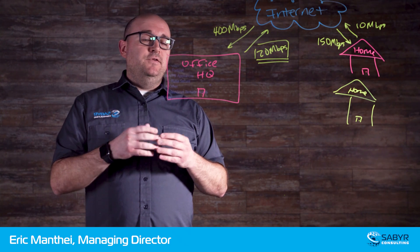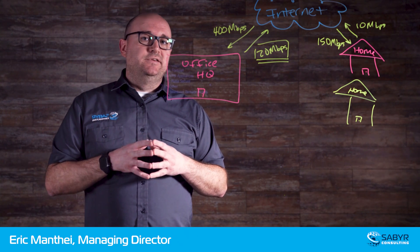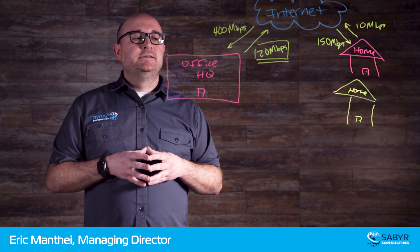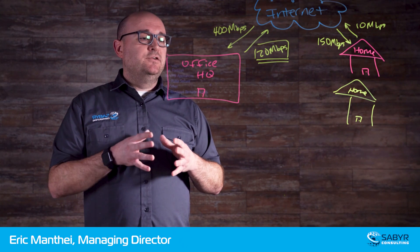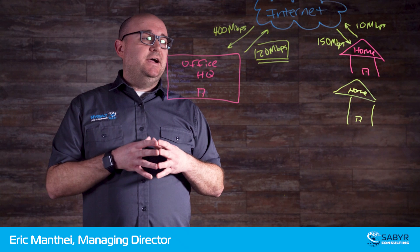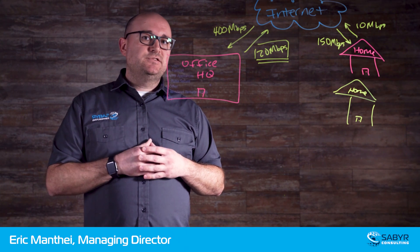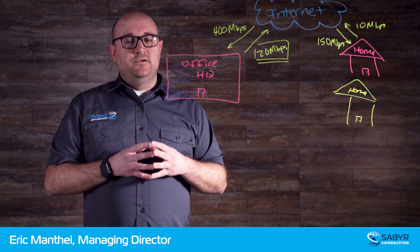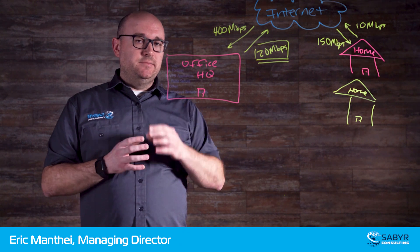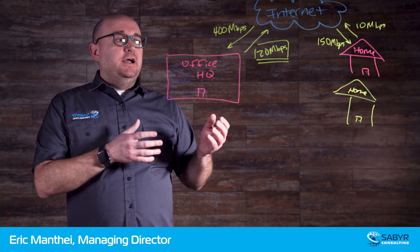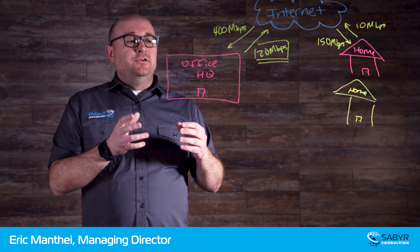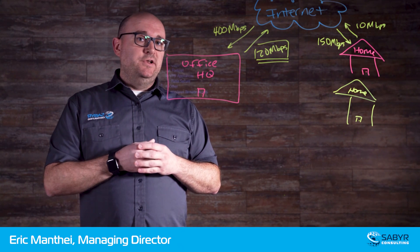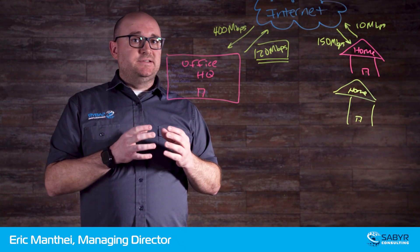Finally, if you don't have a firewall with an on-box VPN service or a Pulse Secure type of VPN appliance, you may look at what is known as Windows Remote Access Server. If you have a Windows server in your environment, this is a feature that you can set up that will allow you to manage remote access through a VPN using Windows Remote Access Server.